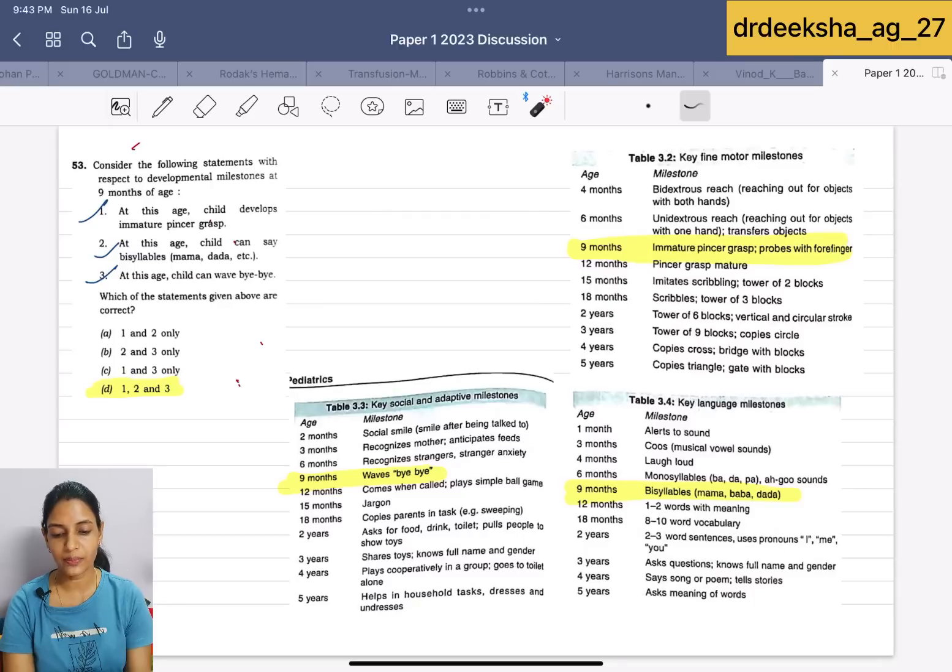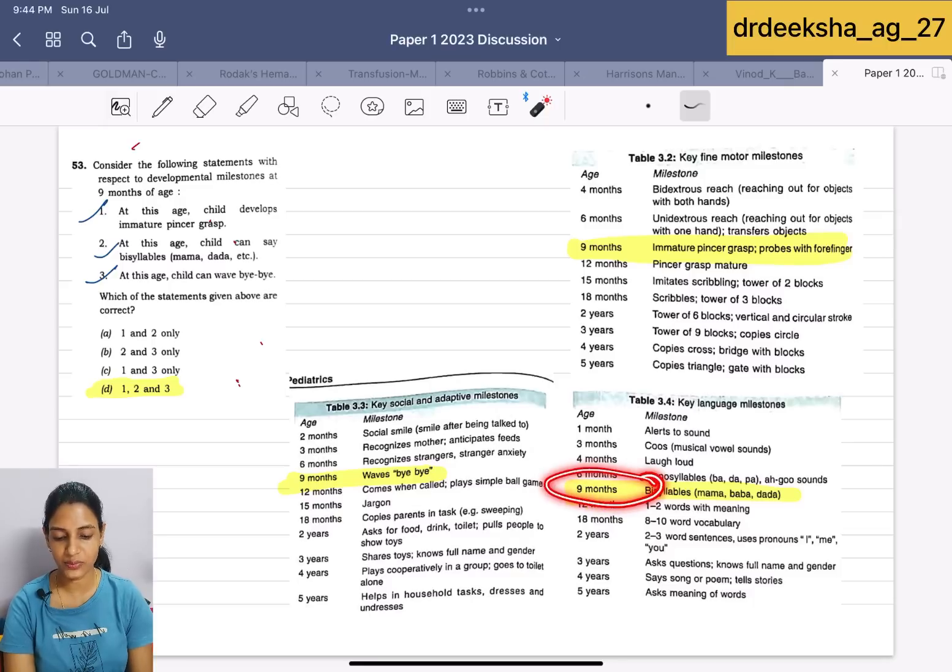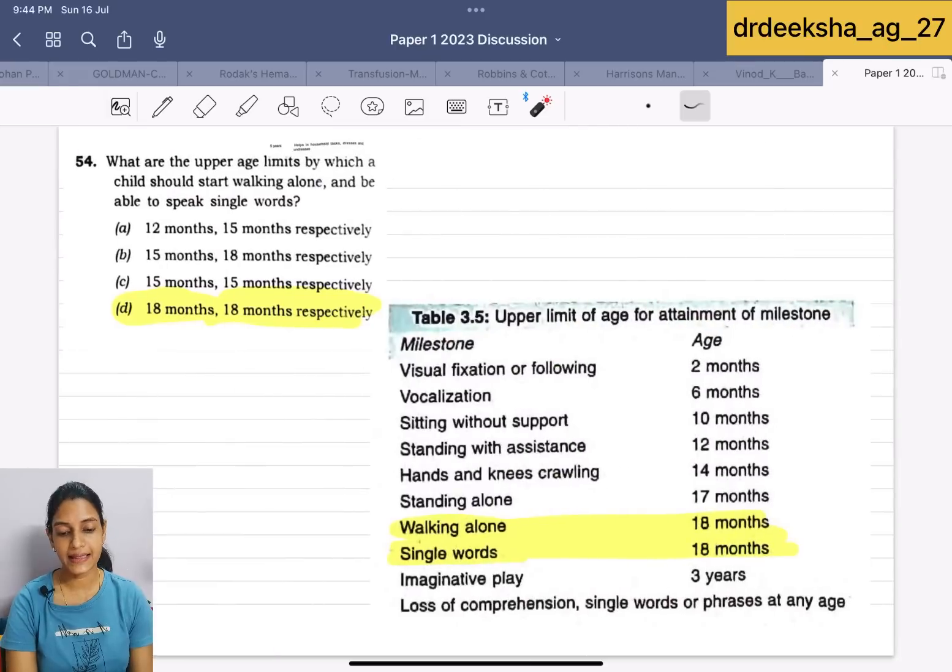Next is about the developmental milestones. Immature pincer grasp is developed at the time of 9 months. Bisyllable mama, baba is at the age of 9 months and waves bye-bye at the age of 9 months. All 1, 2 and 3 are true. Next is able to walk alone and single word upper limit age is 18 months for both. Answer is D.